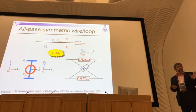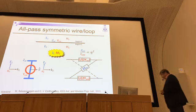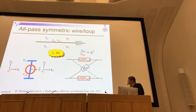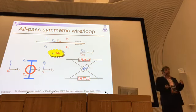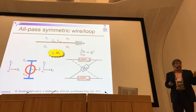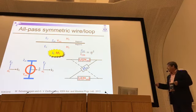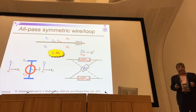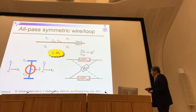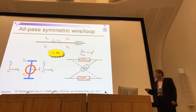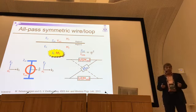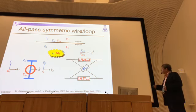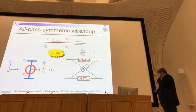This is the generic unit cell used for making Huygens surfaces. You see it is an electric dipole shown in blue which is capacitively loaded — this gives you the electric current J. There is also a loop that gives you the magnetic current, also in general capacitively loaded. This unit cell can be the basis of making Huygens metasurfaces.